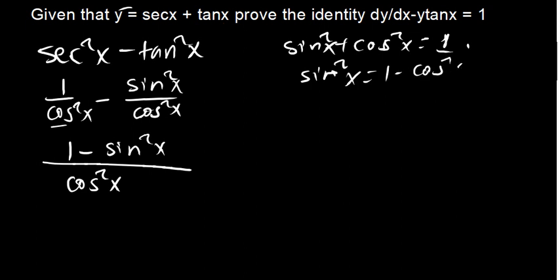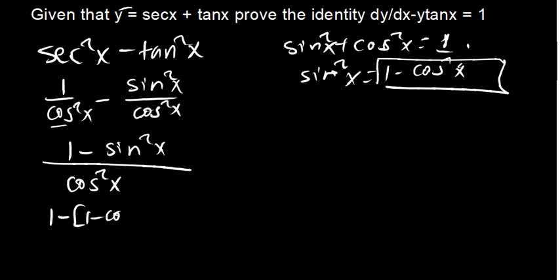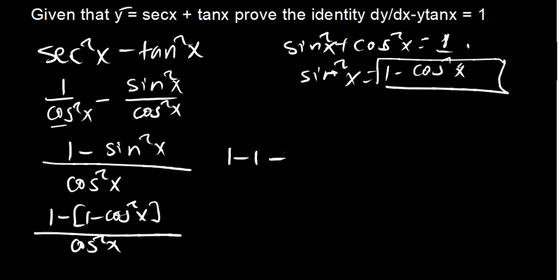We know sin squared x plus cos squared x equals 1, so sin squared x equals 1 minus cos squared x. Replacing sin squared x with 1 minus cos squared x, I get 1 minus open bracket 1 minus cos squared x, putting brackets to keep the negative affecting everything inside, giving cos squared x over cos squared x.